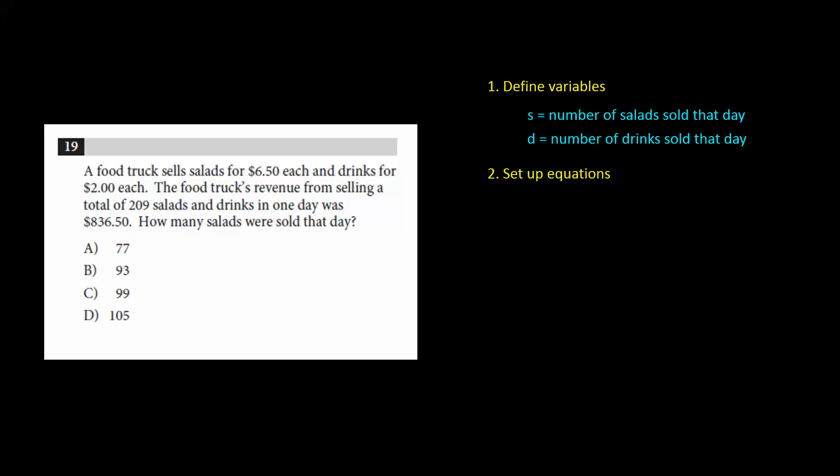For the first equation, we use the fact that the truck sold a total of 209 items that day. This means the number of salads sold, S, plus the number of drinks sold, D, equals 209.